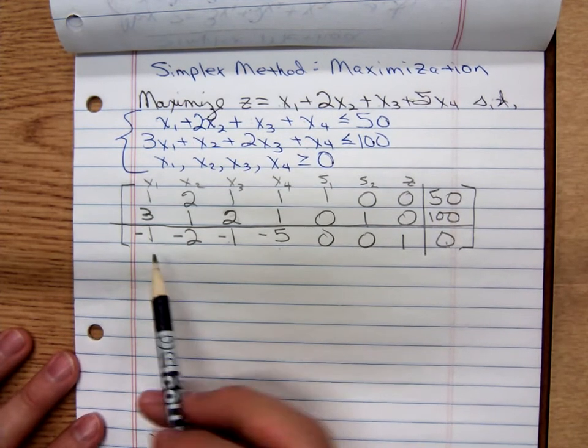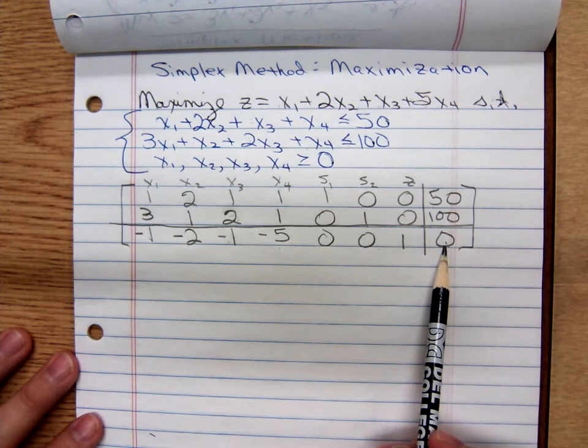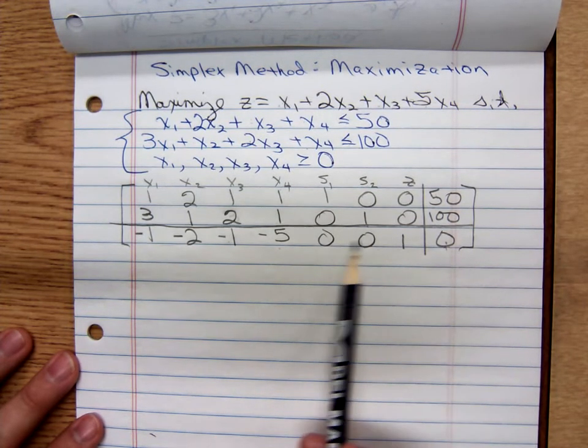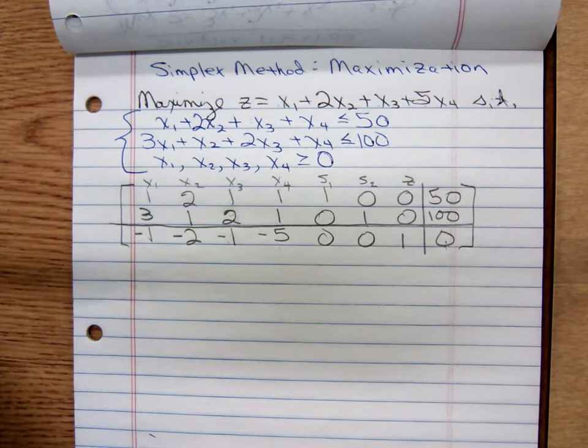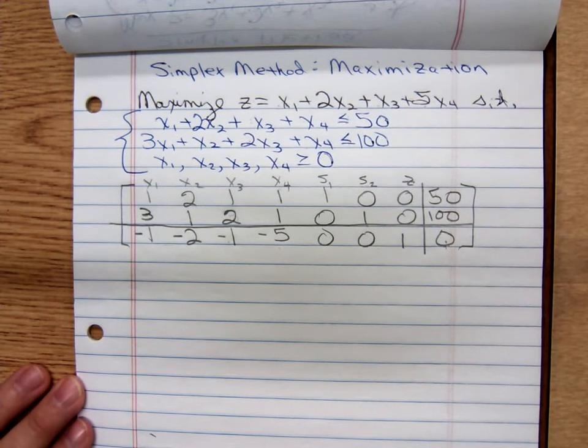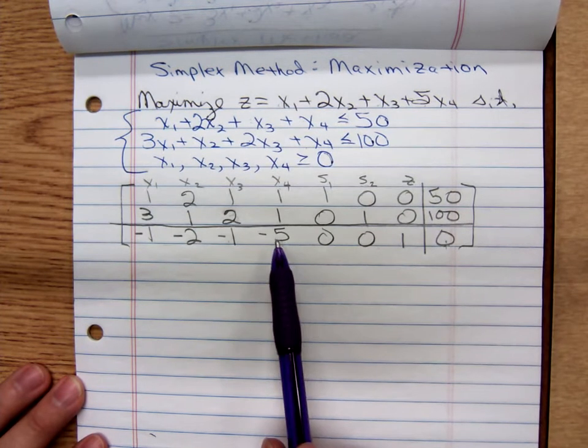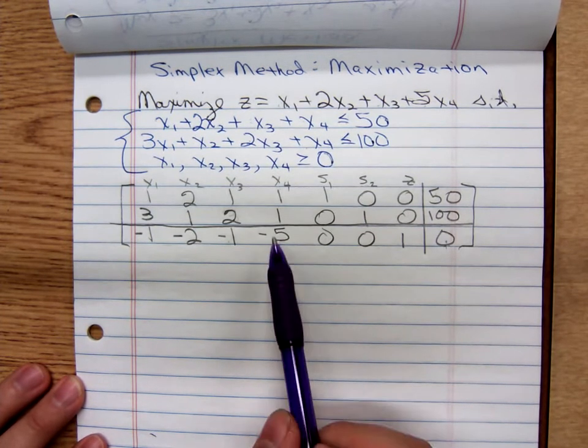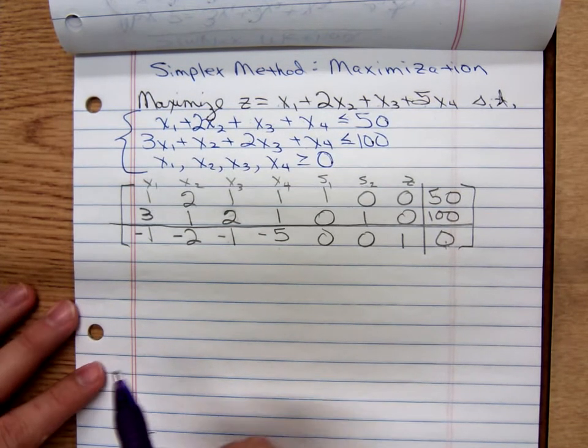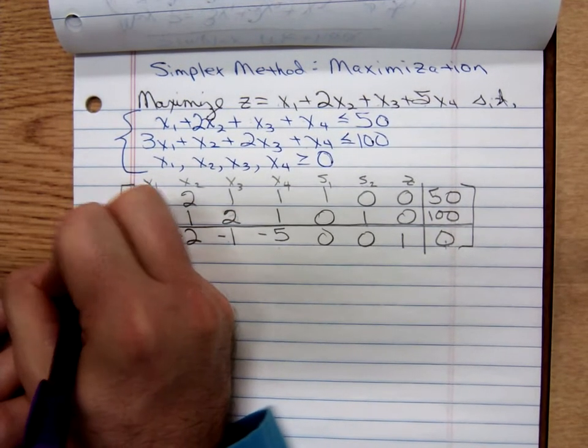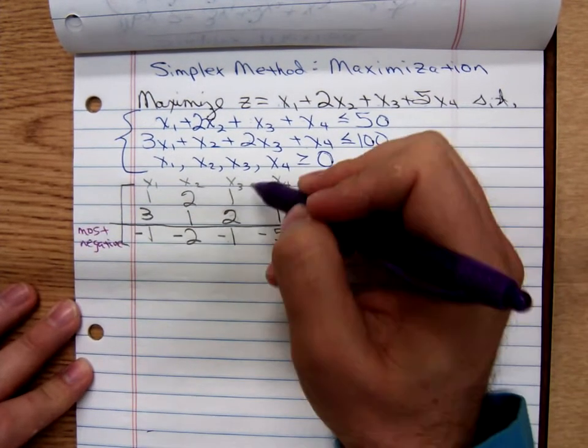As long as we have negative indicators, then this number is not the maximum value of the function. We certainly have negative indicators. If there are negative numbers on the last row, then you haven't found the maximum value yet. So how do we get started? You select the most negative indicator. So that would be negative 5. You choose the negative number with the largest absolute value. So you want the most negative here.